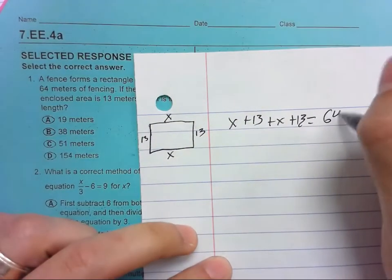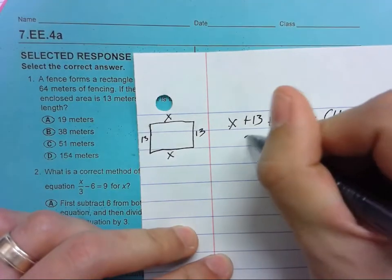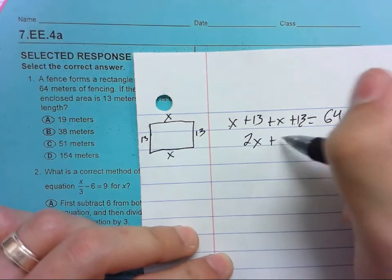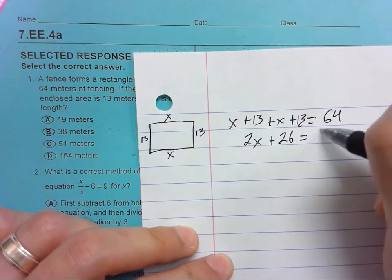So let's combine like terms. We have X and X, so we actually have 2X, 13 and 13, plus 26, equals 64.